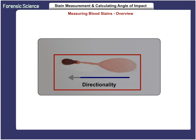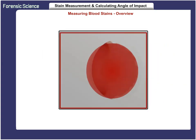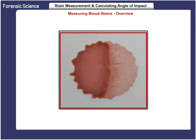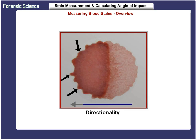Directionality is easy to determine here — it is from right to left. If the angle of impact is 90 degrees, then the blood drop is in the shape of a circle, not an ellipse. Directionality is not always easily determined with near-circular stains. In the case of the stains shown, directionality can be determined by the visible scalloping, which is from right to left.